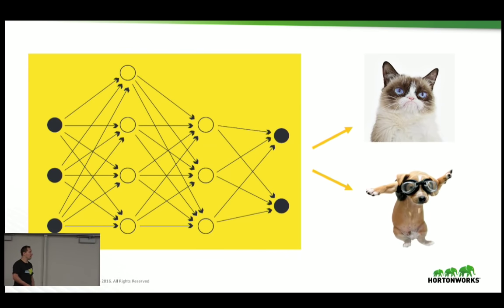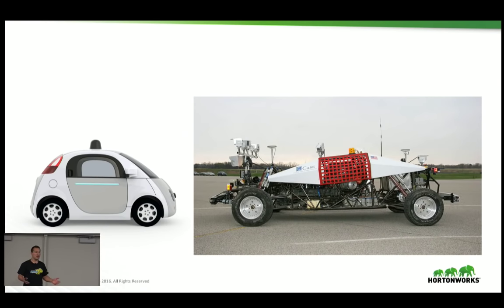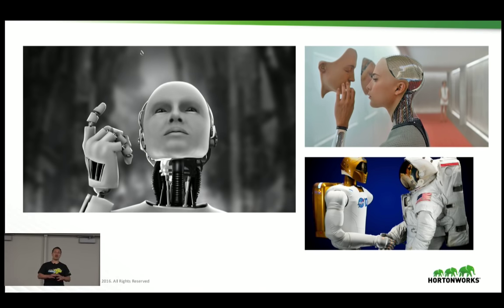Deep learning is sometimes debated as being part of machine learning or not. Autonomous cars — including a Google car and a car from the 2007 DARPA Urban Challenge — use some machine learning methods. Advanced AI, such as robots like Ex Machina or the NASA android being sent to space, extrapolates machine learning further into higher-level AI territory.